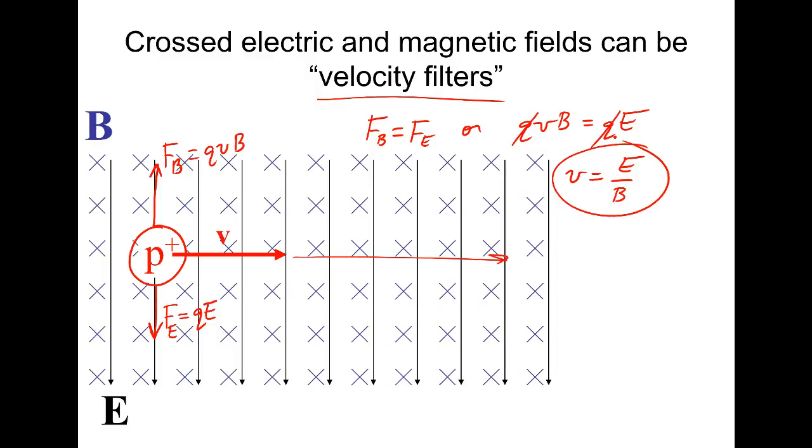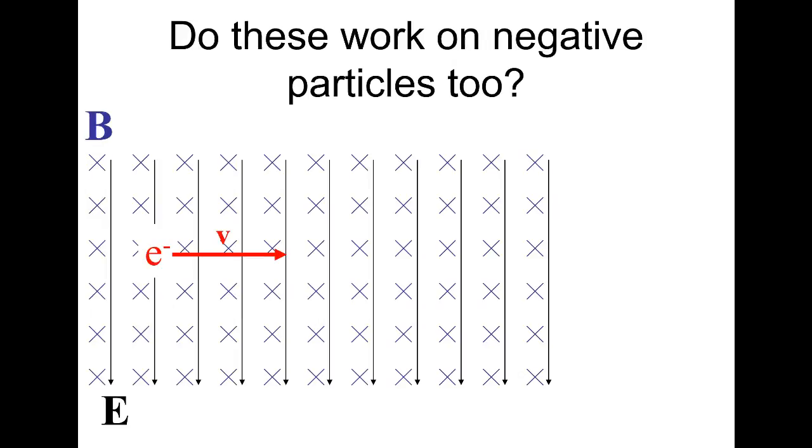That's why it's known as a velocity filter, because if you want a particle that has a specific velocity, you just set the electric field and magnetic field to certain values using other means. So does it work for a negative particle? Sure. You just have opposite directions. You have magnetic force and you have electric force. So it works exactly the same.